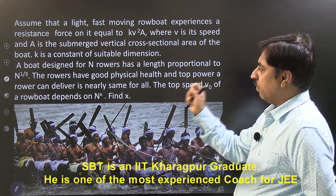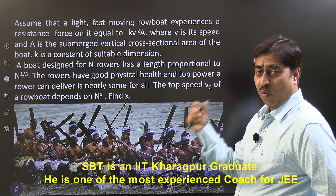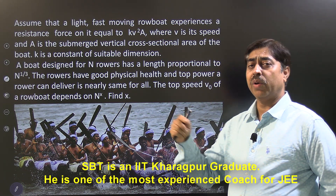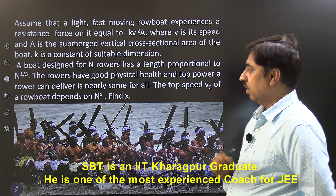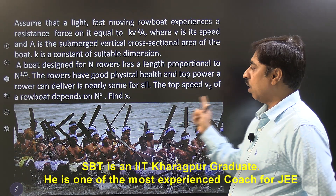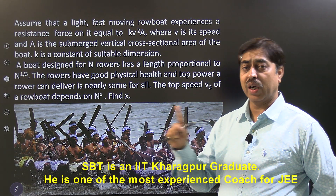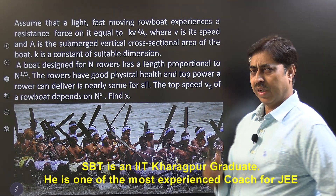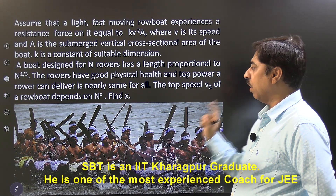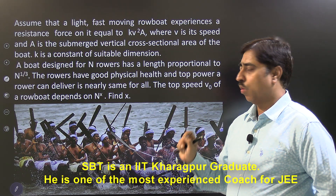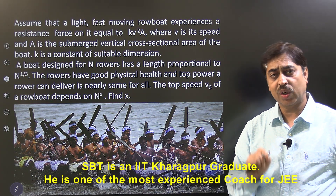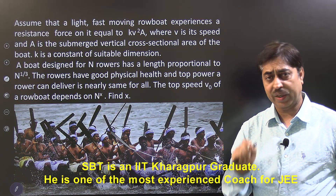A boat designed for n rowers has a length proportional to n raised to the power 1/3. The rowers have good physical health and the top power a rower can deliver is nearly the same for all. The top speed v₀ of a rowboat depends on n raised to the power x. What is the value of x?